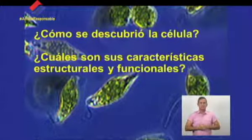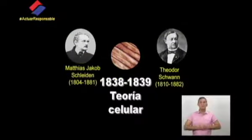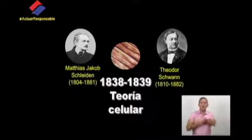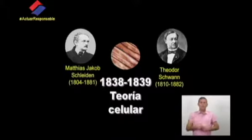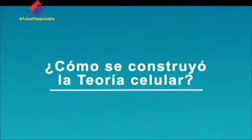Observemos estas interrogantes que nos van a ayudar en este recorrido por las ciencias naturales: ¿Cómo se descubrió la célula? ¿Cuáles son sus características estructurales y funcionales? Es necesario hablar de la teoría celular, un descubrimiento científico que cambió el mundo de la biología para siempre. Estamos hablando de Schleiden y Schwann, quienes descubrieron la teoría celular y por primera vez hablaron de la célula como esa pequeña unidad de estructura y función.